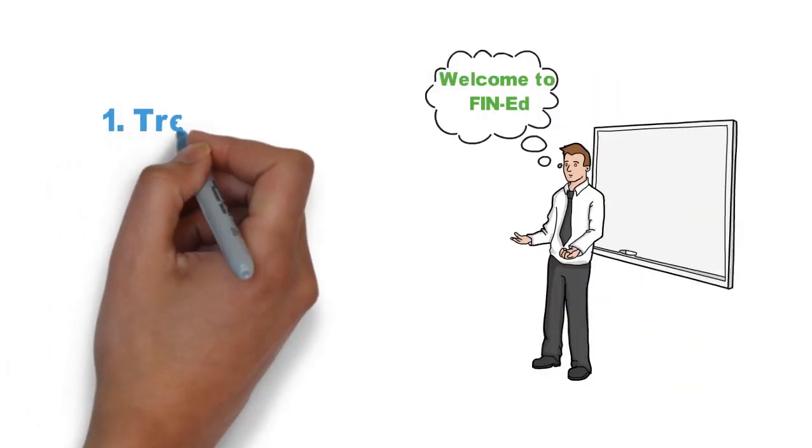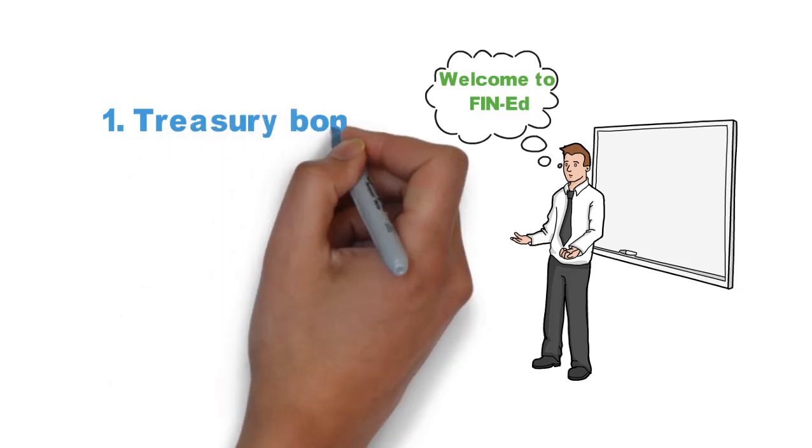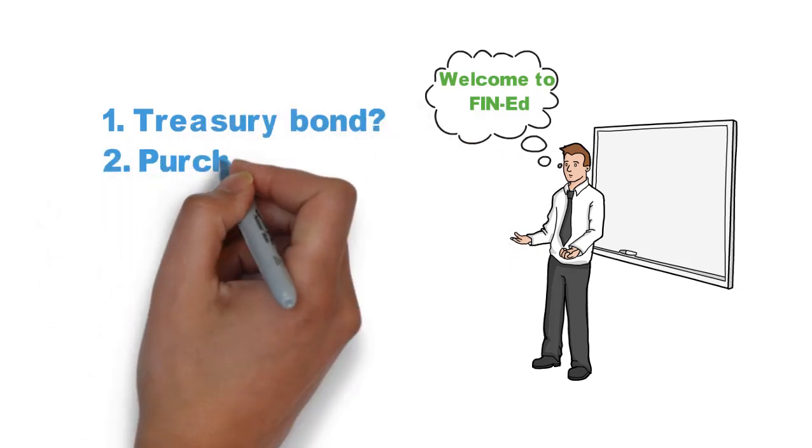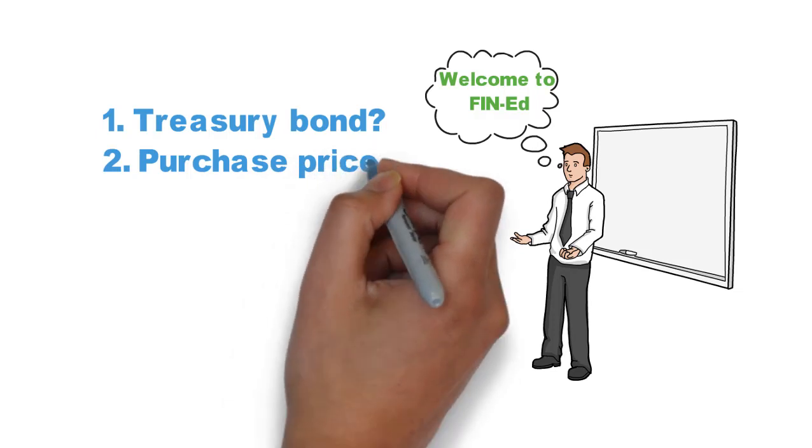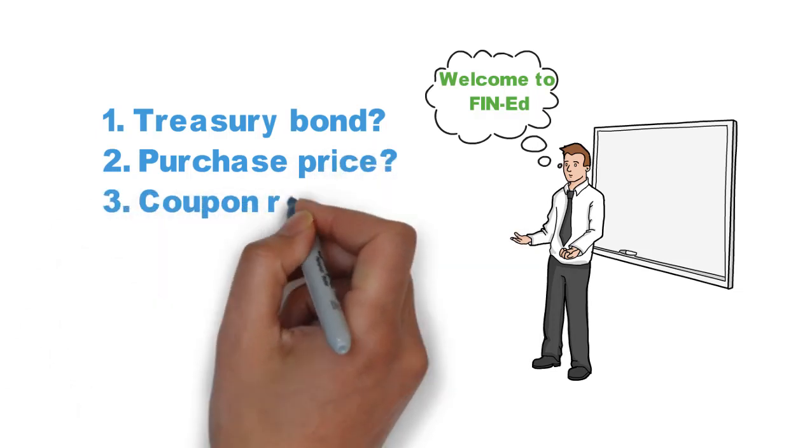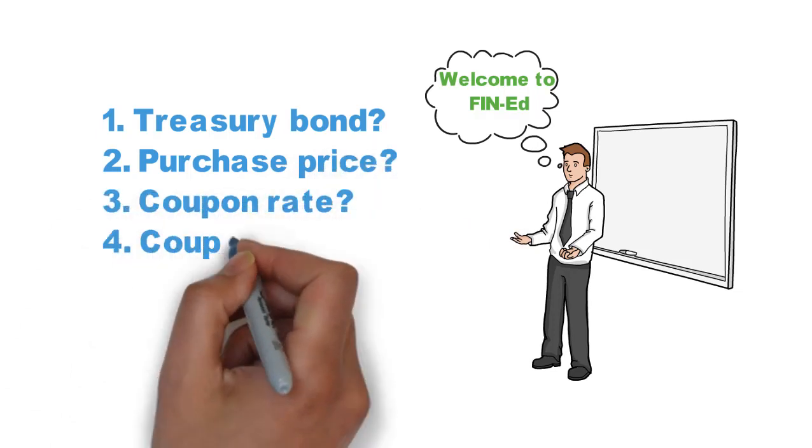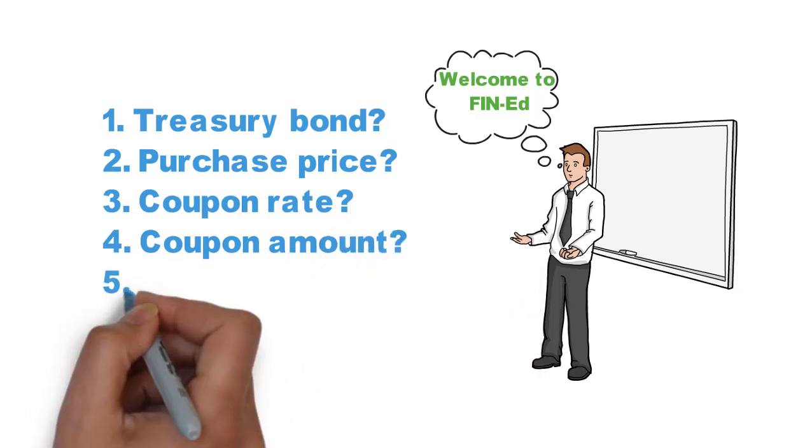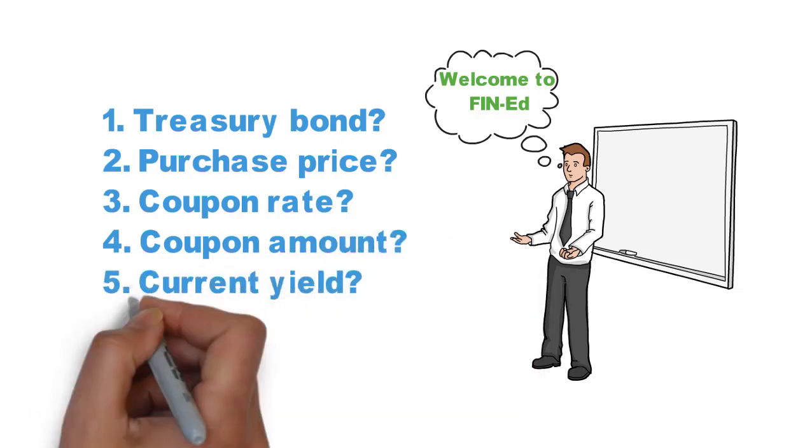I'm going to discuss what a Treasury bond is and show with numeric examples how you can find out the price of the bond, coupon rate, and coupon amount. In addition, if you invest in this bond, how do you calculate the current yield? Let's get started.